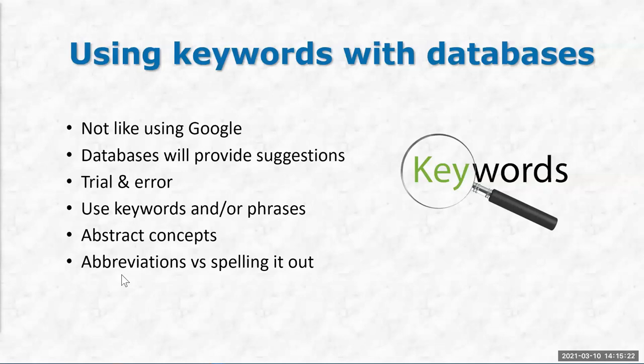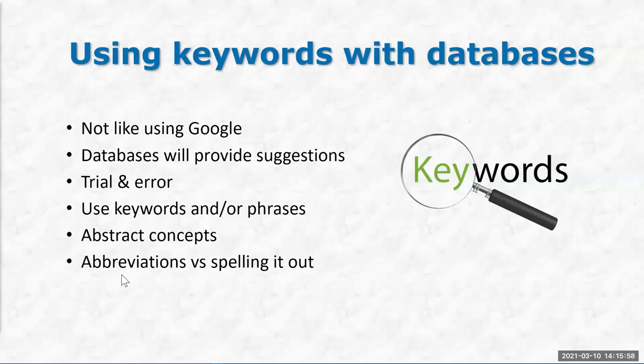It's really trial and error, unfortunately. That's why your brainstorming chart might be useful to keep track of what keywords gave you lots of hits versus fewer hits. That'll give you ideas of which keywords and phrases work best when you move on to the next database, because you're going to be searching hopefully more than one database. That's the best way to get the most coverage and the most relevant and credible resources. It's about finding the right combination of words and phrases — you can use keywords, phrases, or a combination of both.